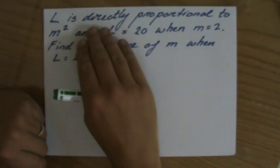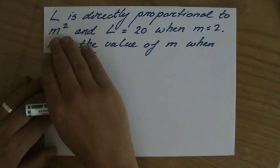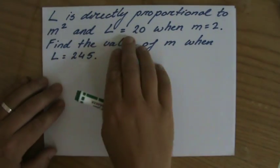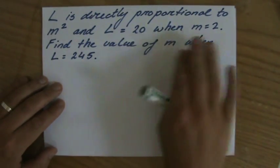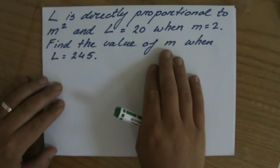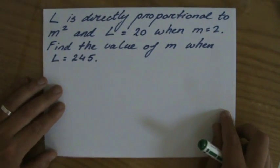They give me the question: L is directly proportional to m squared, and L is 20 when m is 2. Find the value of m when L is 245.